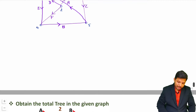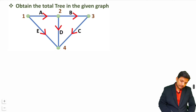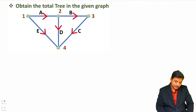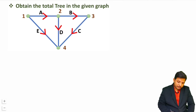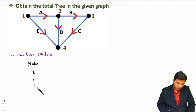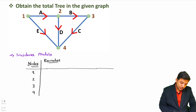Now let us have the second problem. In the second problem we have been given with a graph and we are asked to obtain the total number of trees in this given graph. When you want to obtain the total number of trees, first of all we should make an incidence matrix. Write nodes vertically — we are having total 4 nodes: 1, 2, 3, 4. And horizontally we have branches: A, B, C, D, E.